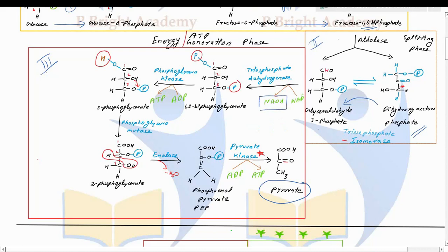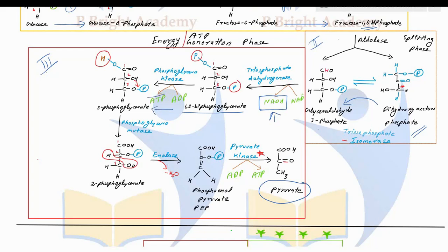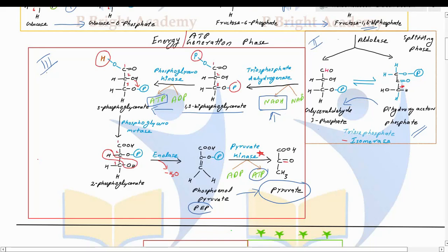When glyceraldehyde-3-phosphate gets converted to 1,3-bisphosphoglycerate, one molecule of NADH is formed. Then 1,3-bisphosphoglycerate gets converted to 3-phosphoglycerate, and there is a formation of ATP. The third place is when phosphoenolpyruvate gets converted to pyruvate — again, an ATP is formed. So we get three places where energy molecules are formed: one NADH and two molecules of ATP.